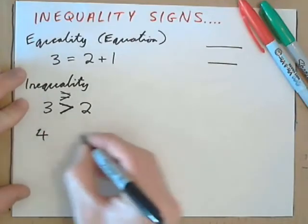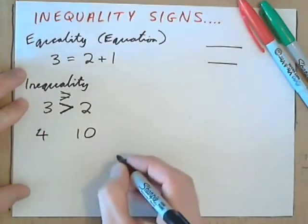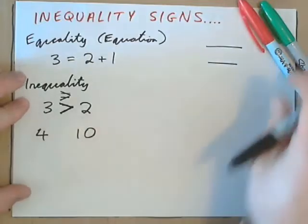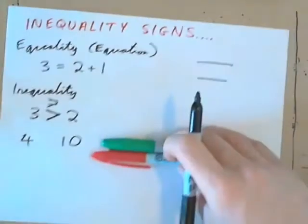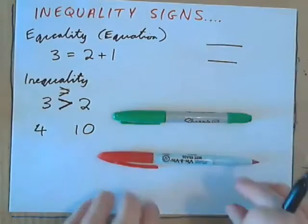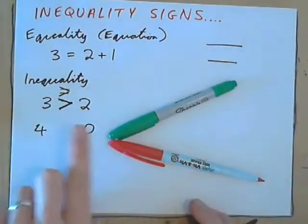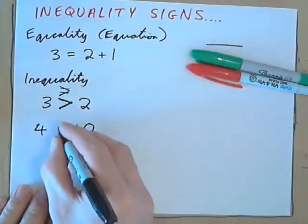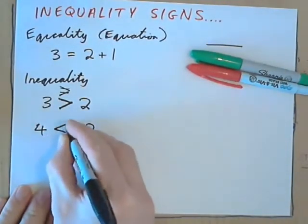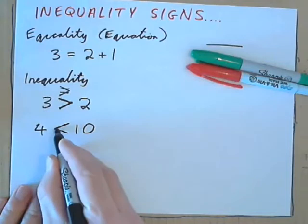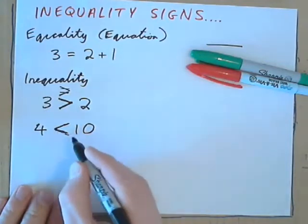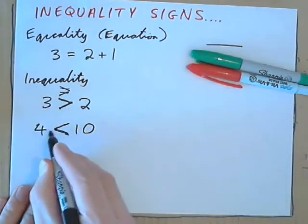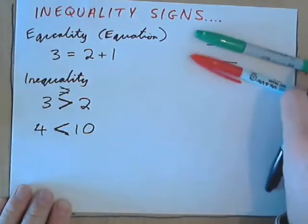So if we had 4 and 10, we would take the equal sign, and we would tilt them so that the point is beside the small number, the gap is beside the big number. So point beside the small number, gap beside the big number, and that's the reason. 4, now it says, obviously, 4 is less than 10.